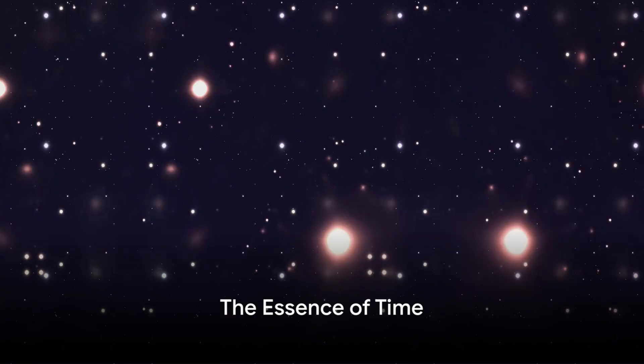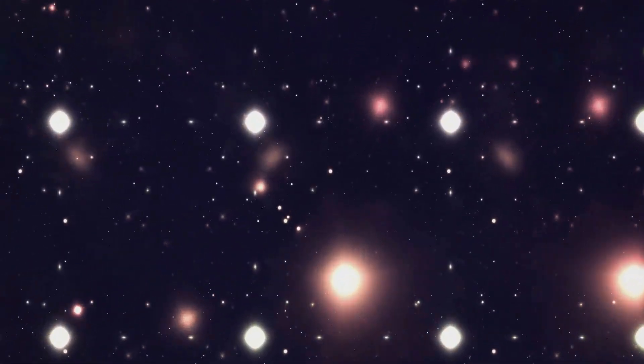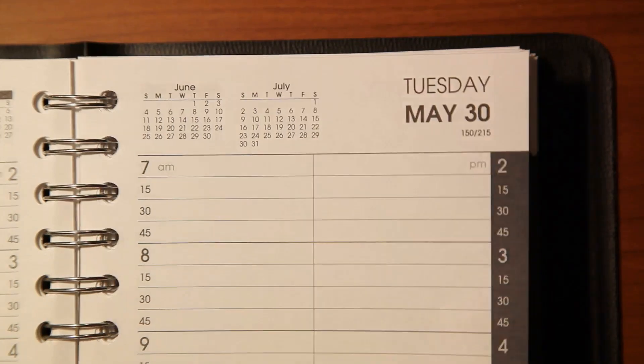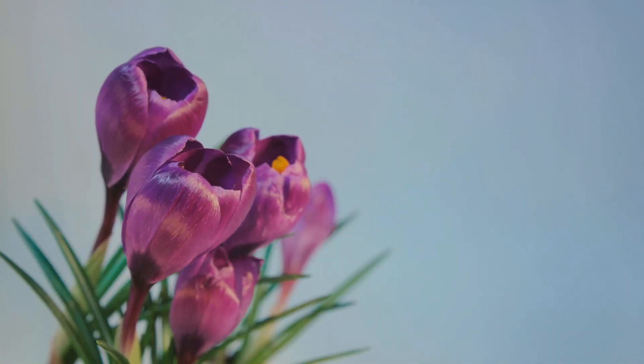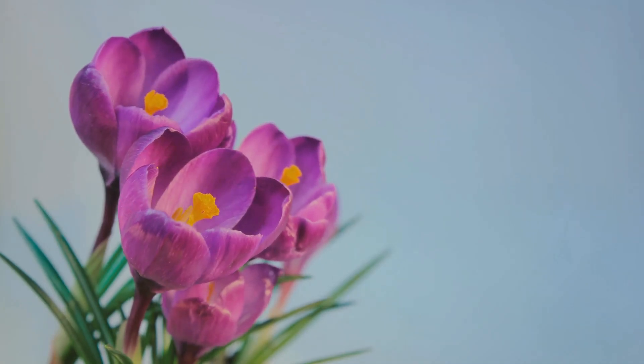But what actually is time? Well, in the grand scheme of the universe, time is the progression of events from the past through the present to the future. It's the reason why everything doesn't happen all at once. It's the reason why we age, why we feel the flow of seasons, and why we have the illusion of progression.